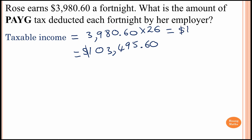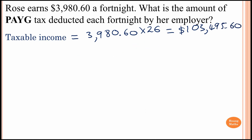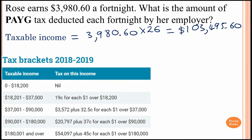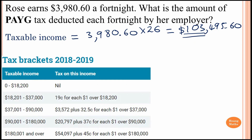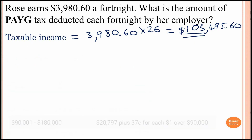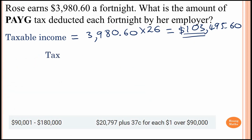So the annual taxable income is $103,495.60. The next step is to work out which tax bracket she is in. Her income is $103,000, so she falls in this bracket here — between the relevant income range shown on the tax table.